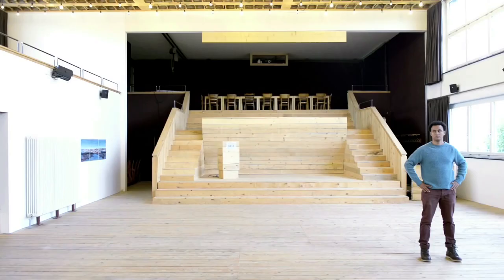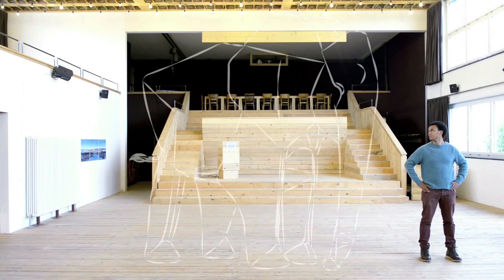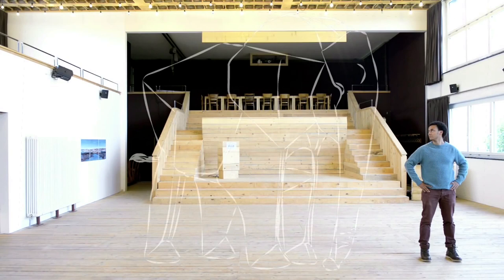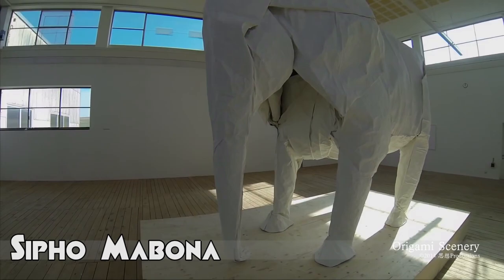But let's talk about the origami elephant in the room, specifically Sifo Mabana's life-size white elephant, fashioned from a single 220-pound square of handmade paper.